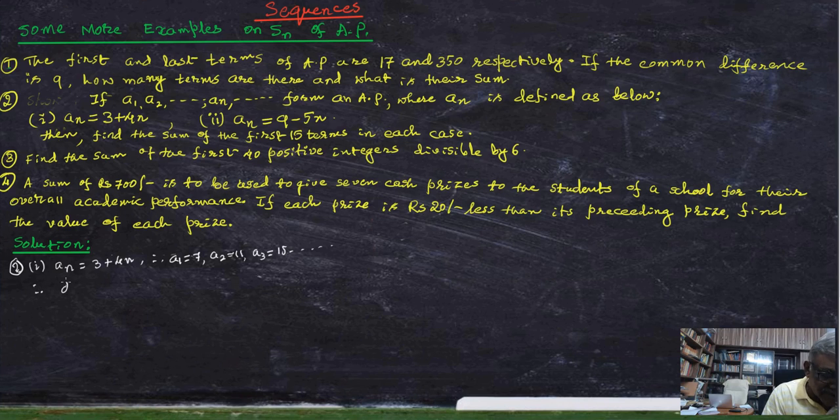Therefore, the common difference here, a is equal to 7 first term, and common difference d is 11 minus 7 that is 4. 15 minus 11 is 4. So we have got the first term and common difference.